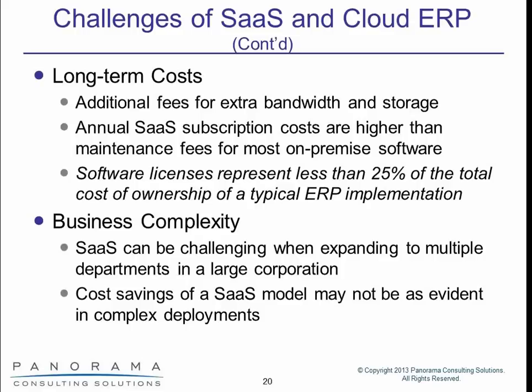One key point to keep in mind: software licenses themselves represent less than 25% of the total cost of ownership of a typical ERP implementation, according to our research and experience. So when thinking about which option is cheaper from a software license perspective, remember that's only one-fourth of your total cost. The other three-quarters relate to the implementation itself — training employees, configuring the software, and all the other work that goes into any ERP implementation, whether SaaS or on-premise. Any cost advantage you perceive with either approach only affects that 25%.